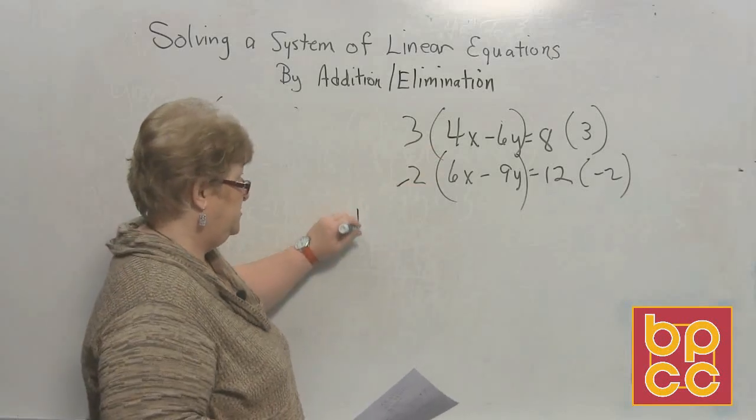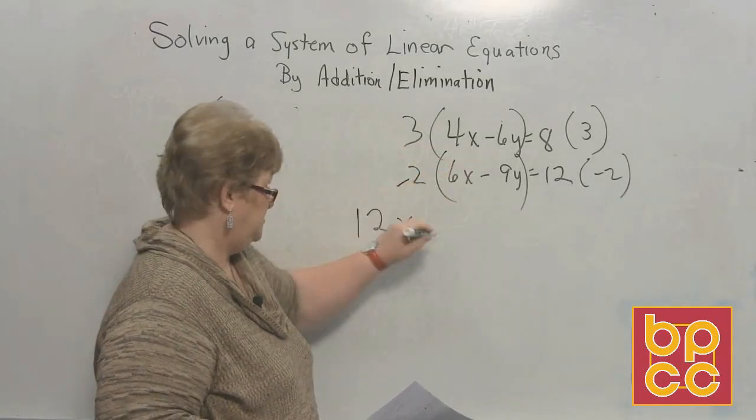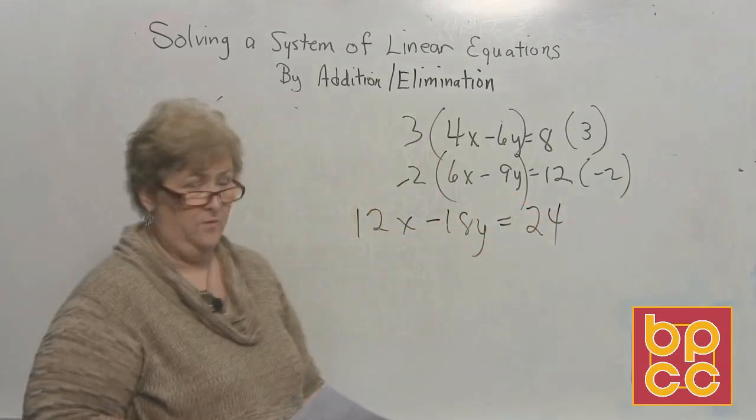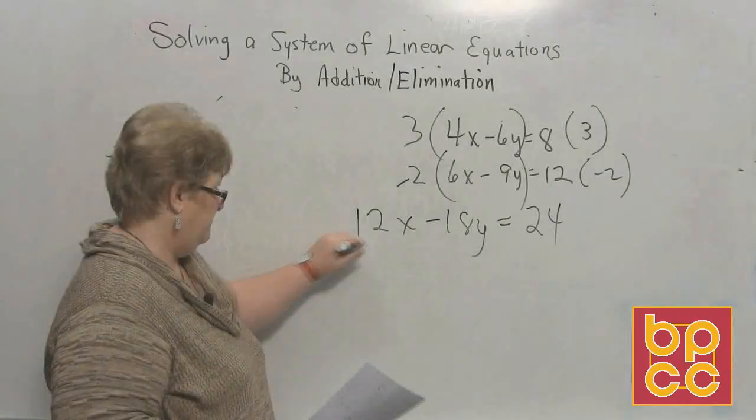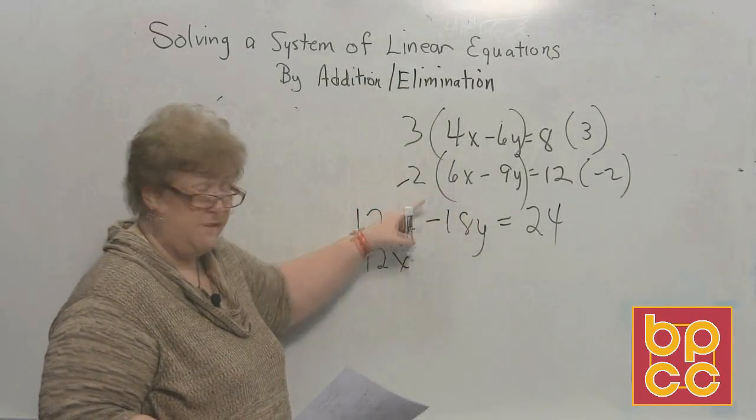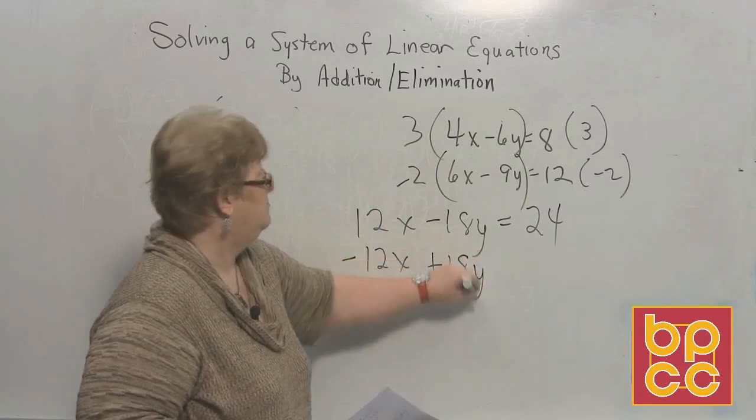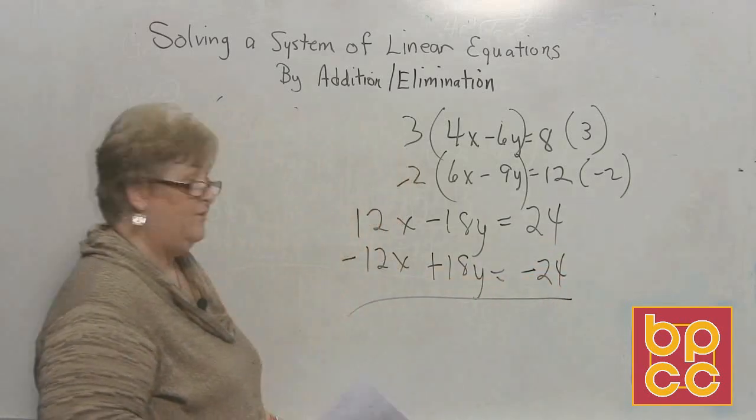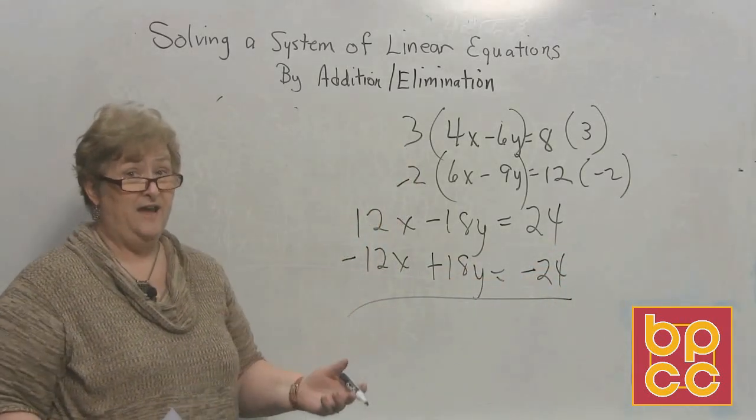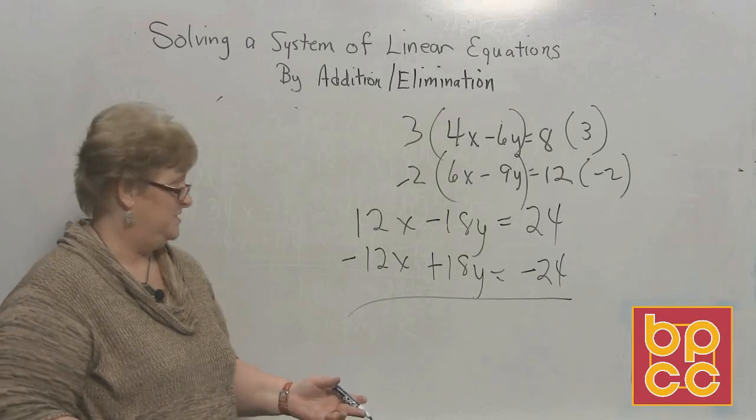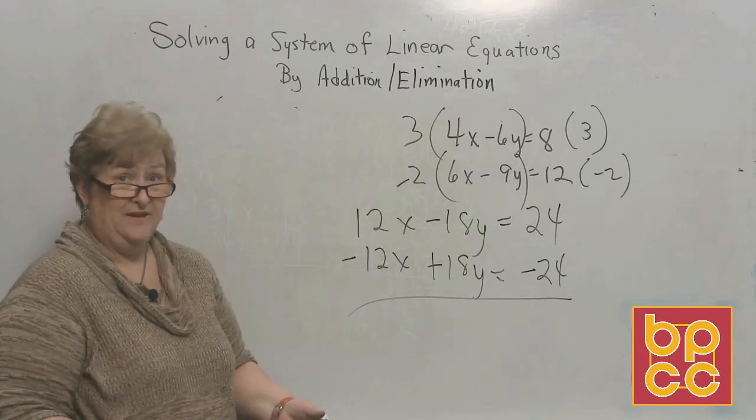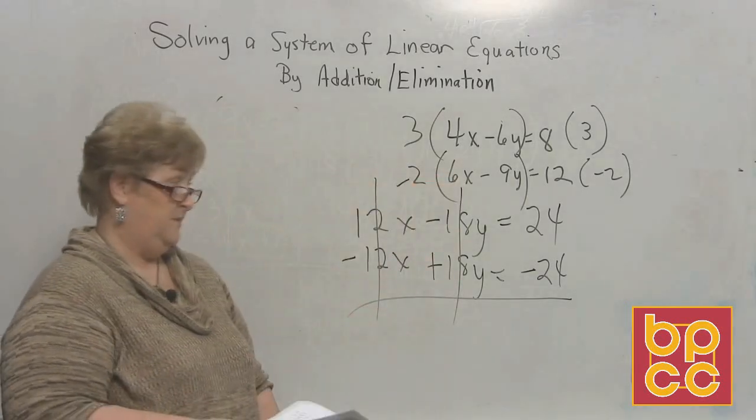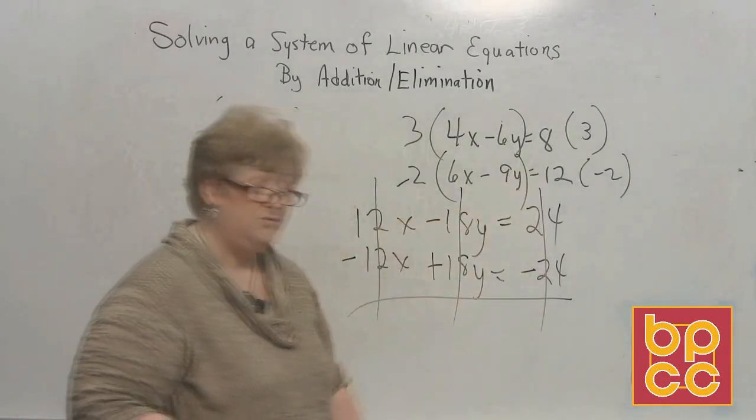Now let's rewrite each one and see what happens. 3 times 4x is 12x minus 18y, which will equal 8 times 3 is 24. Now we have a negative 12x. 2 negatives make a positive plus 18y will equal a negative 24. Now I'm ready to get rid of my x's and solve for y, but I don't have to, do I? This doesn't happen all the time. Don't get used to this. The x's clear out, the y's clear out,